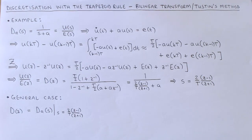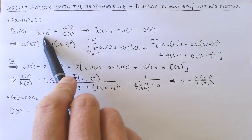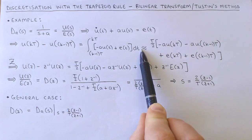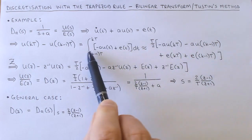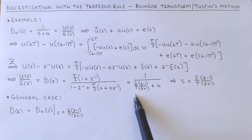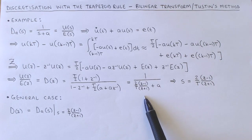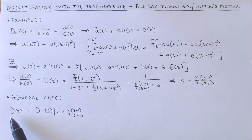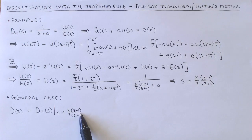We lastly look at discretization with the trapezoid rule. This is also called the bilinear transform or Tustin's method. For our example controller, the continuous transfer function is again converted to a differential equation and we then integrate over one sampling period. We use the trapezoid rule to approximate the integral, which gives us a difference equation, and after applying the z-transform and some manipulation we obtain the transfer function for the discrete controller. Here we have replaced s with (2/T) · (z − 1)/(z + 1). In the general case, we find the discrete controller by taking the designed continuous controller and replacing s with (2/T) · (z − 1)/(z + 1).